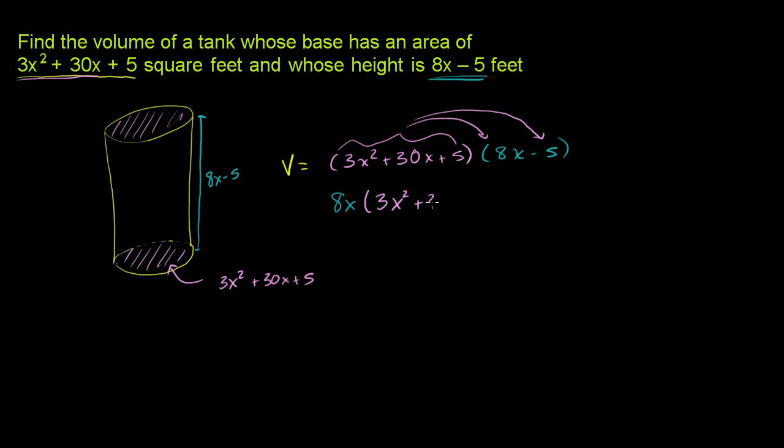3x squared plus 30x plus 5 minus 5 times the entire thing again, or the entire thing times minus 5. So once again, you get 3x squared plus 30x plus 5. And now we just multiply these out. We just distribute out the 8x over this whole thing, and we distribute out the negative 5 over that whole thing.